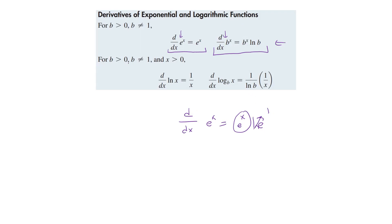Now for b greater than 0 and b not equal to 1 and x greater than 0, then we have the derivative of ln of x is 1 over x. We just saw that one a little bit ago. We showed that one. And if we have the derivative of log base b of x, well, that's going to be 1 over ln of b times 1 over x. We're just taking whatever that base is and times 1 over x.